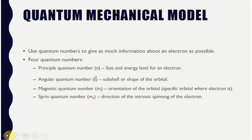The quantum mechanical model uses quantum numbers to give as much information as possible about an electron — where it is in the orbital, its energy, everything. There are four of these quantum numbers. The principal quantum number is identified as lowercase n. It describes the size and energy of an electron and is a very broad quantum number — like saying North America, it only tells us size and energy level.